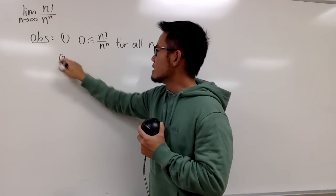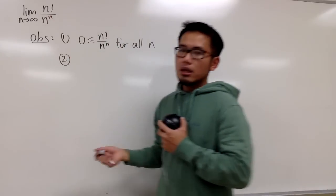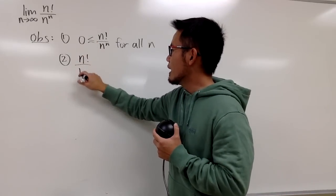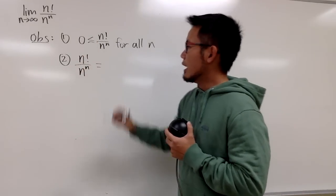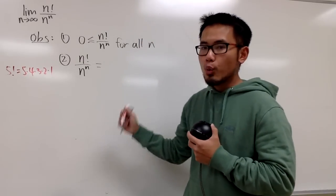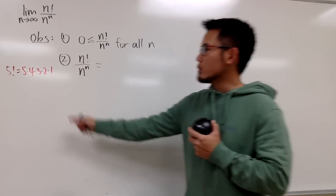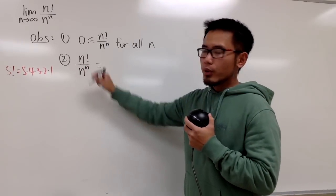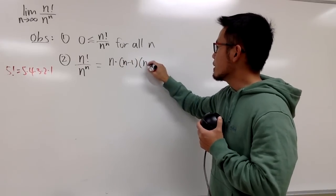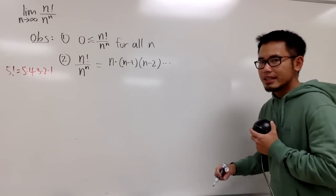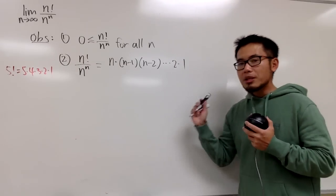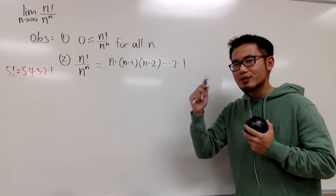Here is where the definition of factorial and the positive whole number power come in. For example, 5 factorial means you start with 5 and go down to 1, multiplying all those numbers. In general, n factorial is n times (n−1) times (n−2) and so on down to 3, 2, 1. We have a total of n factors.